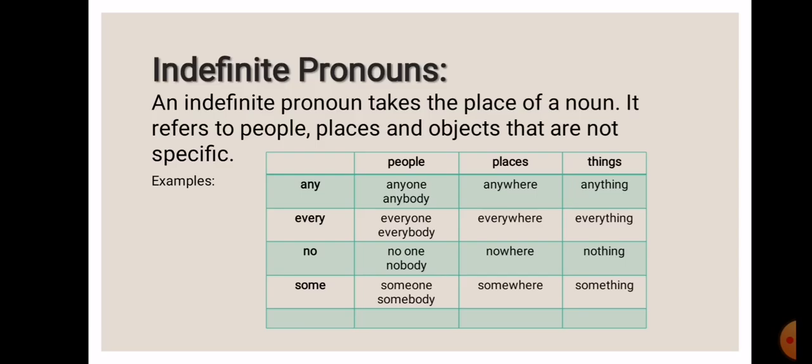What are indefinite pronouns? An indefinite pronoun takes the place of a noun. It refers to people, places and objects that are not specific. For example, anyone, anywhere, anything, nothing, nowhere, no one. They are not specific at all.